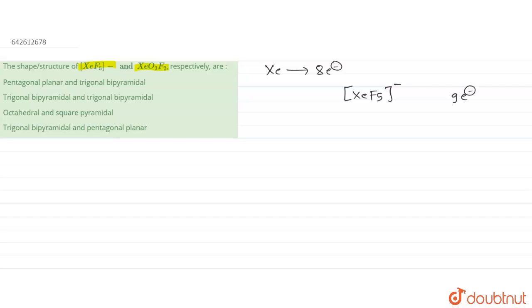So what is the structure going to be? The structure will somewhat look like this: one, two, three, like this. F, F, this is F and this is your F, this is your F. So there is a lone pair over here, there is a lone pair over here.